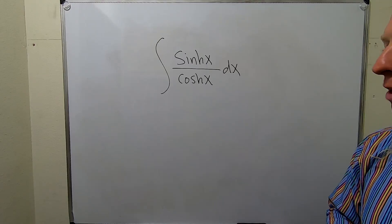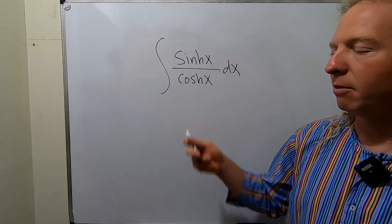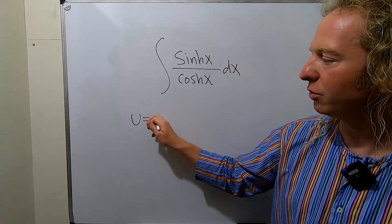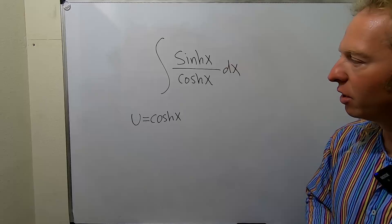To do this, we'll start by doing a u substitution. We'll let u be the piece on the bottom, so u equals the hyperbolic cosine of x. So u is cosh x.